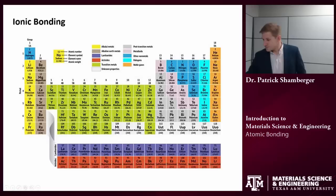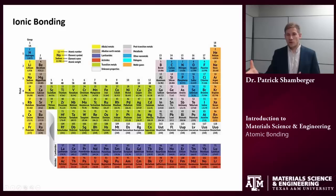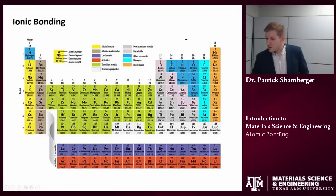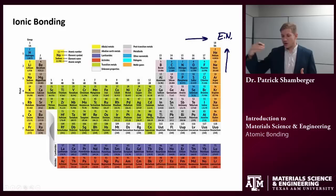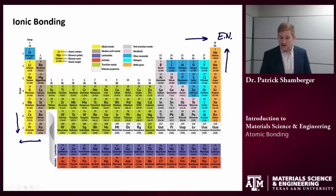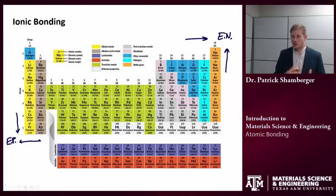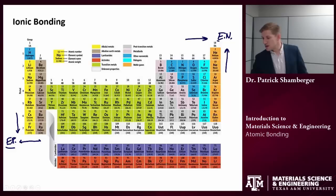First, we're going to talk about ionic bonding. Ionic bonding occurs when we combine a very electronegative atom — something that wants to steal electrons — with a very electropositive atom — something that wants to give off electrons. Electronegativity increases as I go to the right and higher up on the periodic table, while it decreases and atoms become more electropositive as I go to the left and to lower rows. Electropositive atoms want to give up electrons and become cations; electronegative atoms want to accept electrons and become anions.